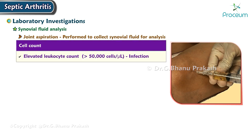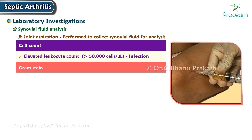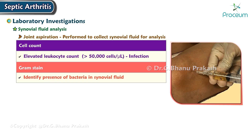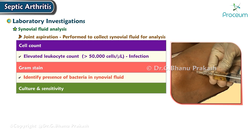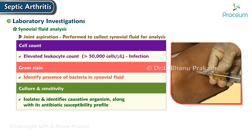Synovial fluid analysis includes cell count, where an elevated leukocyte count of more than 50,000 cells per microliter indicates infection. Gram stain helps identify the presence of bacteria in the synovial fluid, and culture and sensitivity isolates the causative organism along with its antibiotic susceptibility profile.